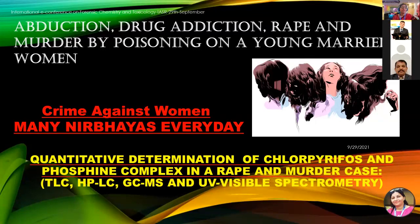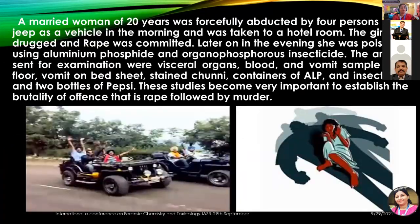Regarding crimes against women — there are many cases like Nirbhaya every day. One case involved abduction, drug addiction, rape, and murder, which was solved by us. It was a case of poisoning of a young married woman. The quantitative determination of chlorpyrifos and phosphine complex in this rape and murder case was performed utilizing hyphenated techniques — TLC, HPLC, GC-MS, and UV-visible spectrophotometry. The married woman was forcefully abducted by four persons using a vehicle in the morning and taken to a hotel room. The girl was drugged and rape was committed, and later she was poisoned using aluminum phosphide and organophosphorus from a pesticide bottle. We analyzed the poisons in the articles sent for examination, establishing the brutality of the offense — rape followed by murder.